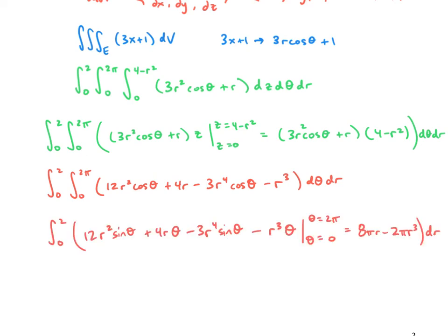There's our antiderivative. Our last step, which we can do together, is the antiderivative in terms of r. We get 4 pi times r squared minus one half pi times r to the fourth. We evaluate from 0 to 2. So we get 16 pi minus 8 pi. Our answer is 8 pi.